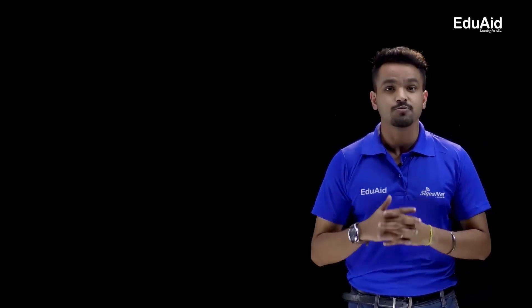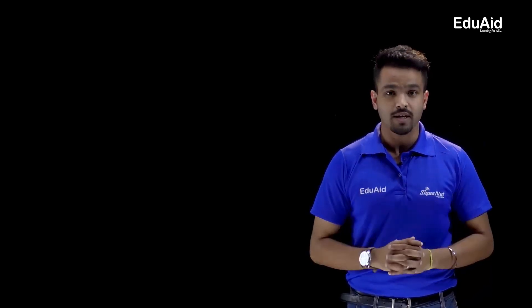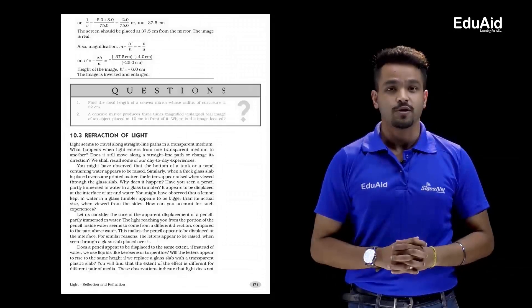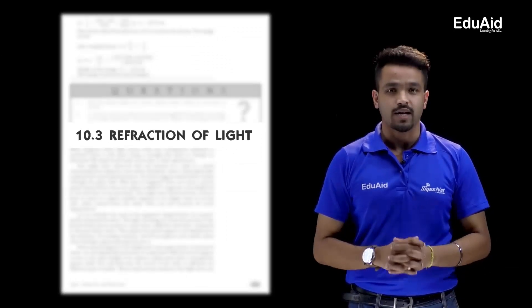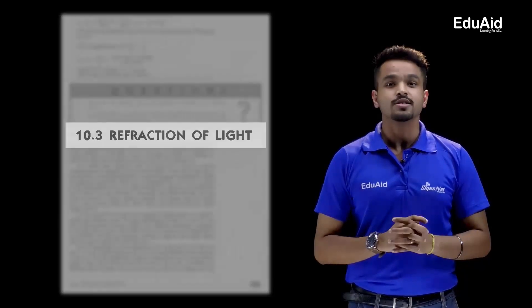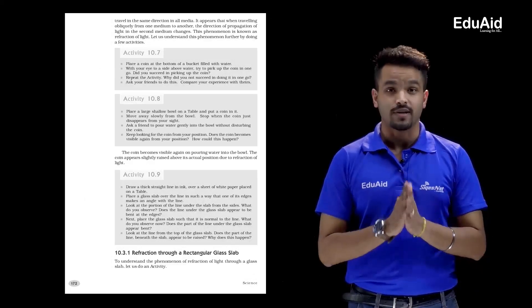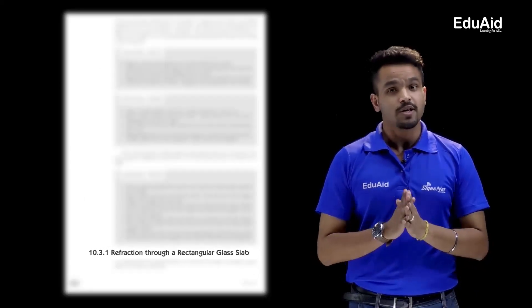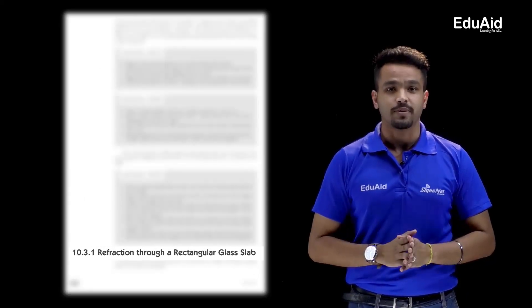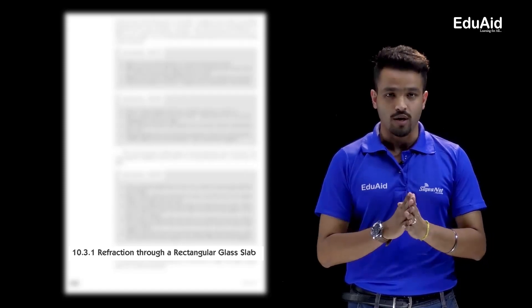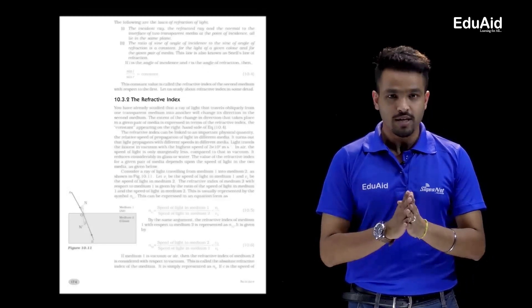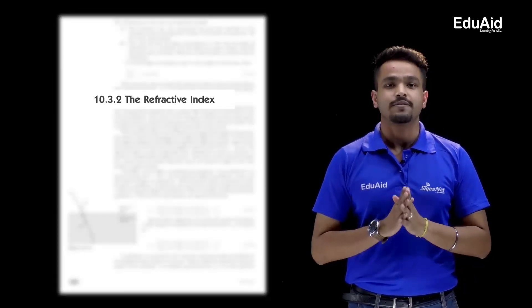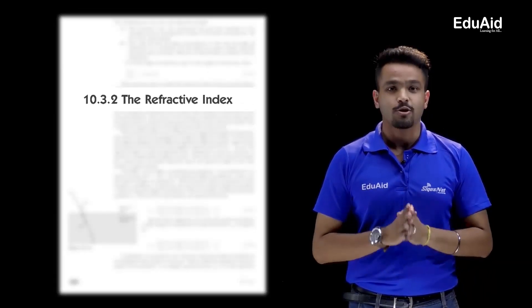Now let us move on to our next topic, which is 10.3, about the refraction of light. We are going to study the refraction of light first by using a rectangular glass slab — this is topic 10.3.1. Topic 10.3.2 is about the refractive index.